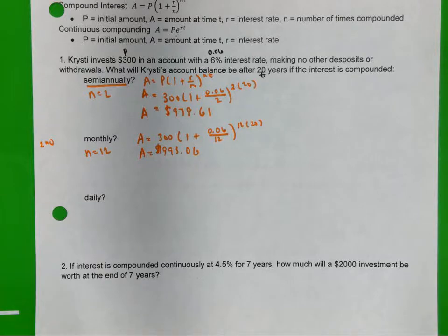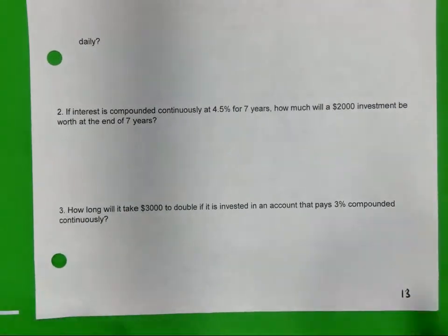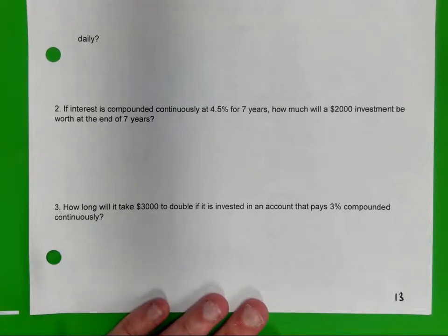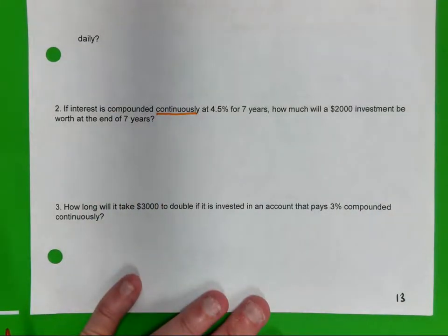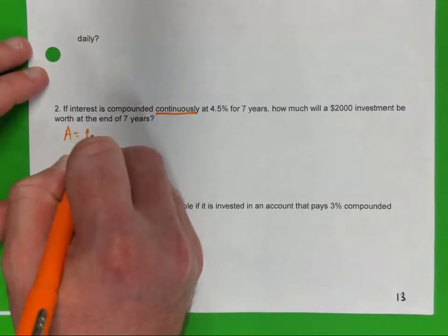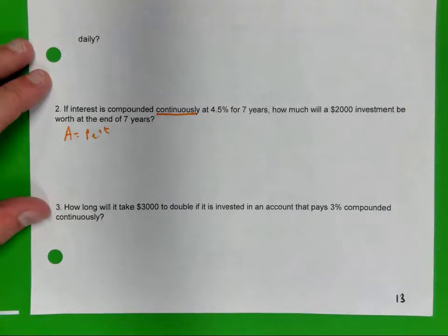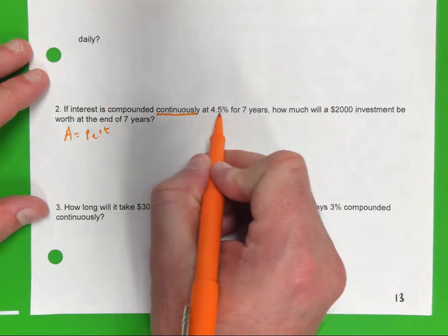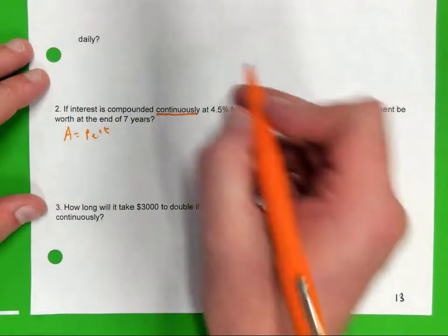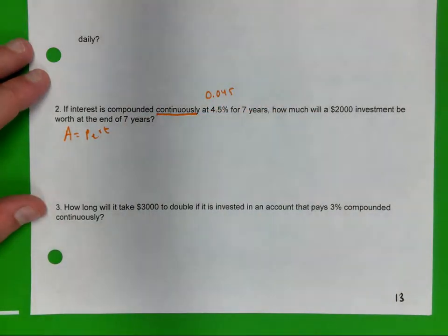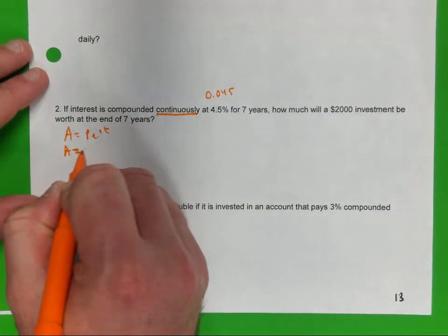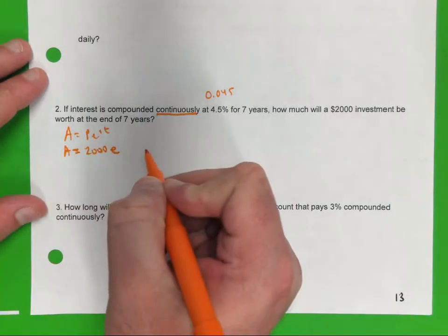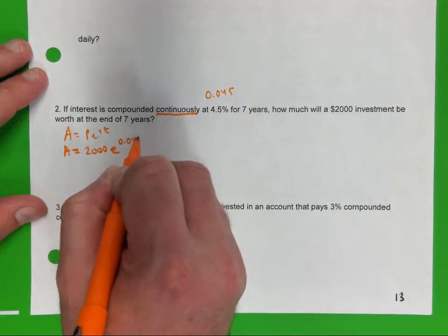I'm going to go to number 2. Number 2 says, if interest is compounded continuously, is that an important word right there? That lets you know there's going to be another formula. You're going to use A equals PERC. Like PERC shampoo. Okay, now let's talk about this. This is your interest rate. How do you change 4.5% to a decimal? It would be 0.045. That's what you would plug in. For 7 years, how much would a $2,000 investment be worth at the end of 7 years? A is your answer. P is, you started with $2,000. E is not a variable. That's a number. Your interest rate is 0.045 times 7.